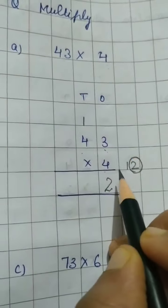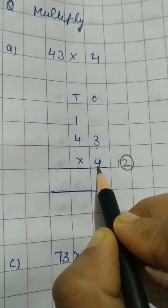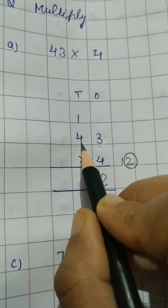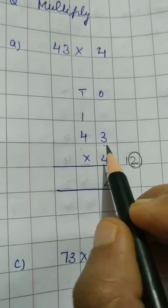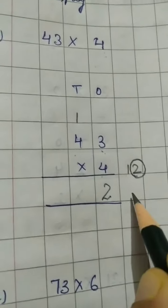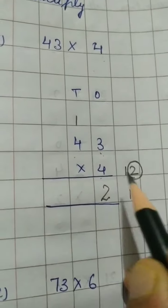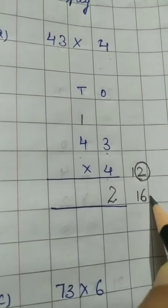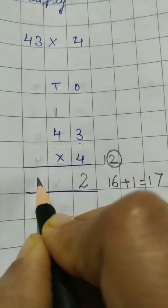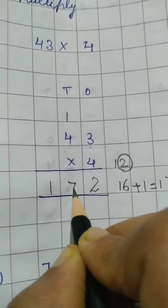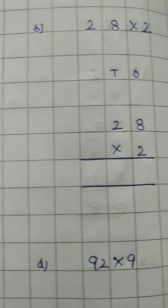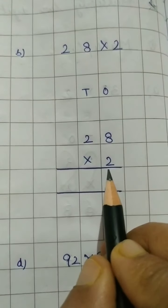Now we speak the table of four up to four: four ones are four, four twos are eight, four threes are twelve, four fours are sixteen. We write sixteen and add the carry digit, which is one. Sixteen plus one is seventeen. So we write seventeen here. The answer is 172.